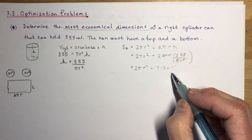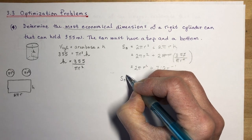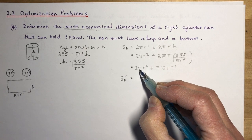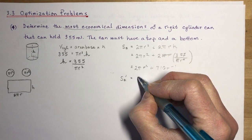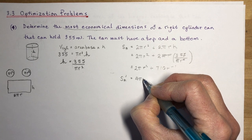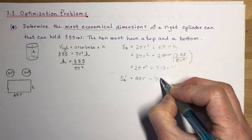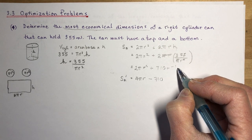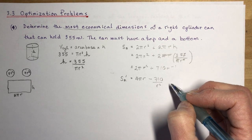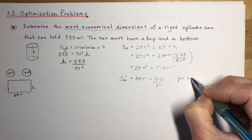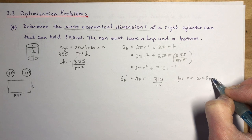Now we take the derivative. Remember, π is just a constant. The derivative of 2πr² is 4πr. For the 710r⁻¹ term, bring the exponent down and subtract one: that gives −710r⁻², or −710/r². So SA′ = 4πr − 710/r². For critical values, set SA′ equal to zero.